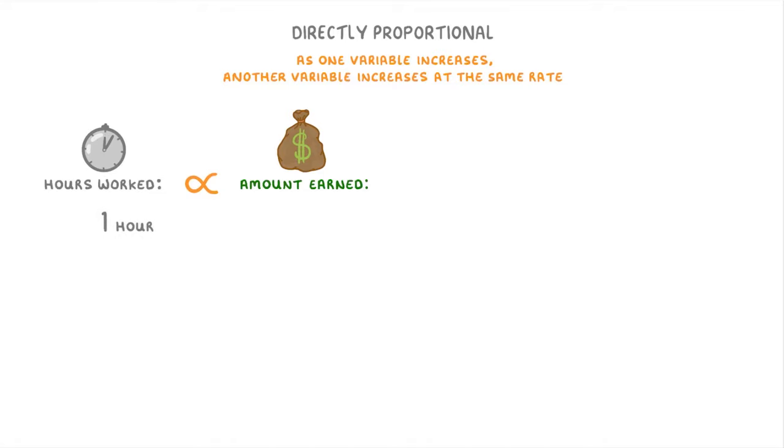This means that if you worked one hour and got paid £12, then if you worked two hours, which is twice as long, you'd get paid twice as much, so £24.